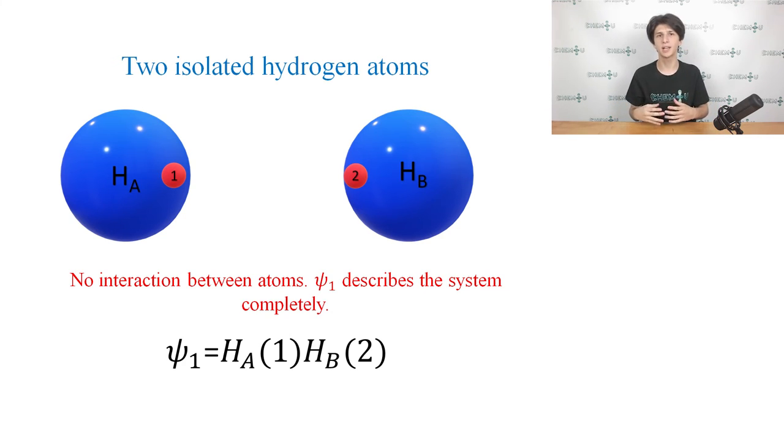Thus, the aforementioned state can be described by a wave function of ψ1. We don't need to know the exact mathematical form of the wave function ψ1 yet. Instead, we need to understand which state it describes. Here, the electron 1 is associated with the nucleus HA, and the electron 2 is attributed to the nucleus HB. The notation HA(1) stands for nucleus HA with electron 1, and so on.